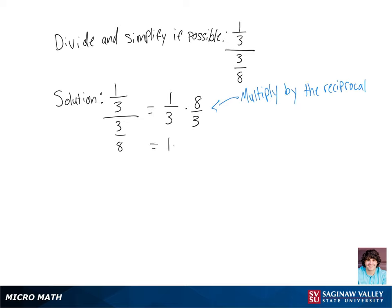Now we can simply multiply the numerator and multiply the denominator. So we get the numerator is one times eight, which is simply eight, and three times three is nine. There are no simplifications that can be done, so our final answer is eight-ninths.